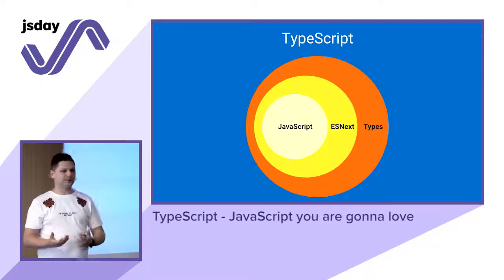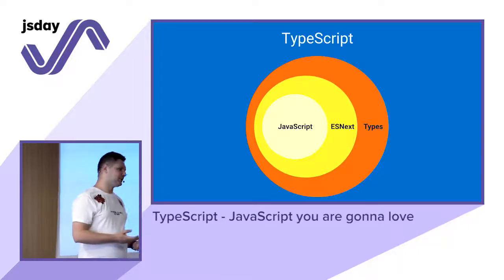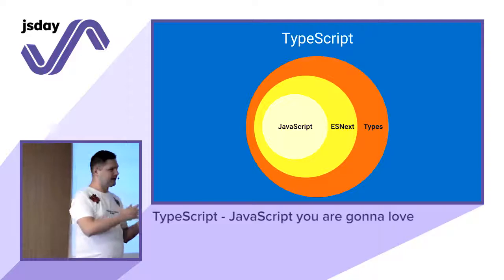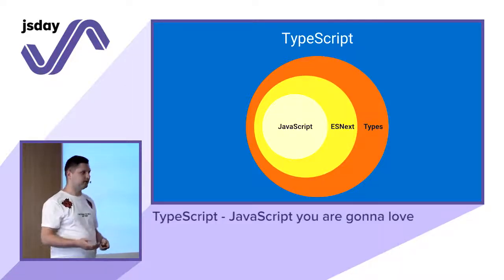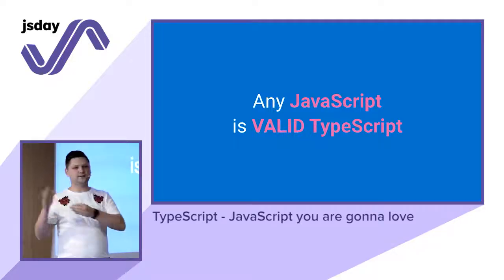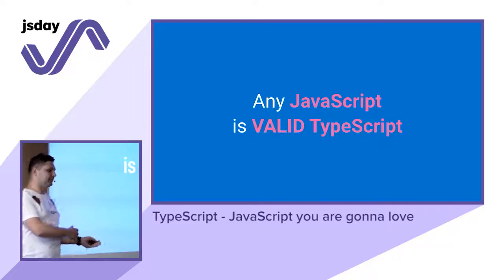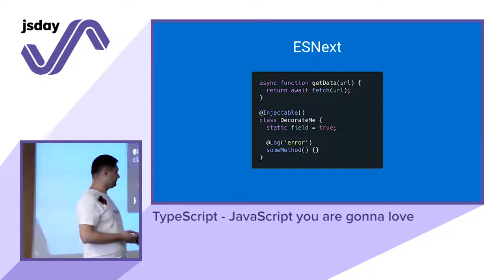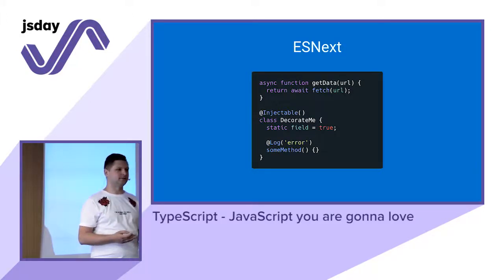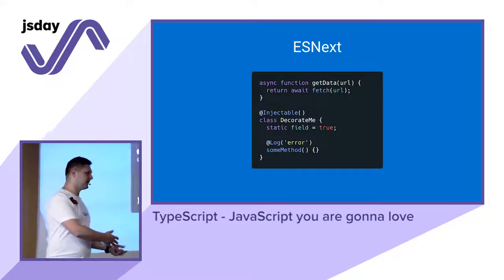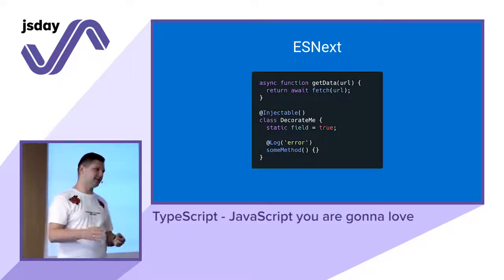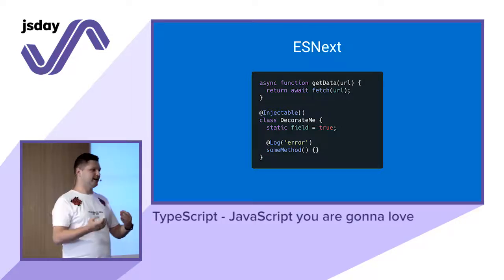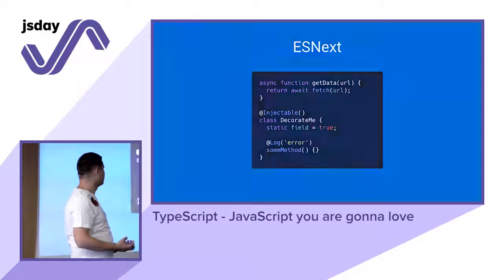So what is TypeScript? At its core, it's just JavaScript. It's called a superset because it includes all proposals up to stage three. In addition to all ECMAScript features, we have the type system itself. Any valid JavaScript is already valid TypeScript. New features available in TypeScript include async/await, which arrived in the standard last year, decorators which are still a proposal, and static properties that arrived in ES2015.